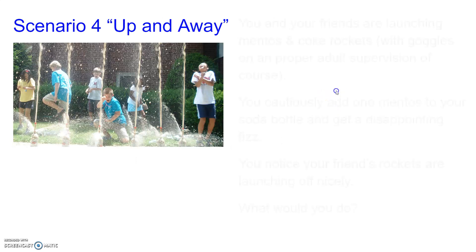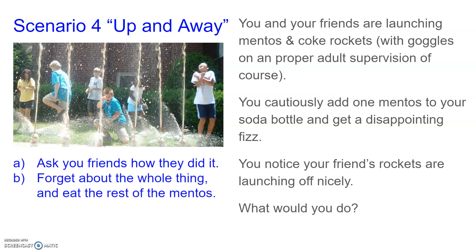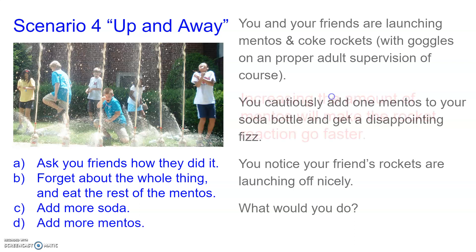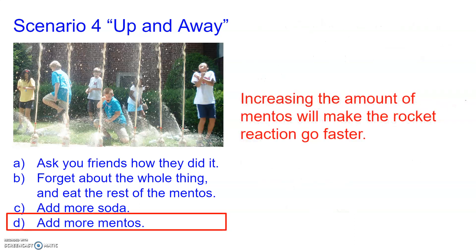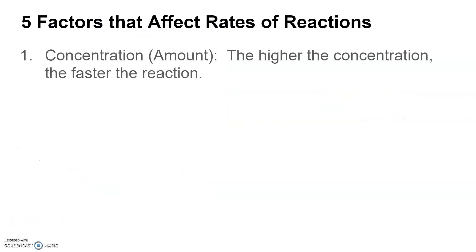The last scenario is 'Up and Away.' You and your friends are launching Mentos and Coke rockets with goggles and proper adult supervision. You cautiously add just one Mentos to your soda bottle and get a disappointing fizz, but your friends' rockets are launching nicely. Would you add more soda or more Mentos? Adding more Mentos highlights the relationship between increasing the amount of reactant and making the reaction go faster. That brings us to the fourth factor: concentration or amount. The higher the concentration or amount of reactants, the faster the reaction.